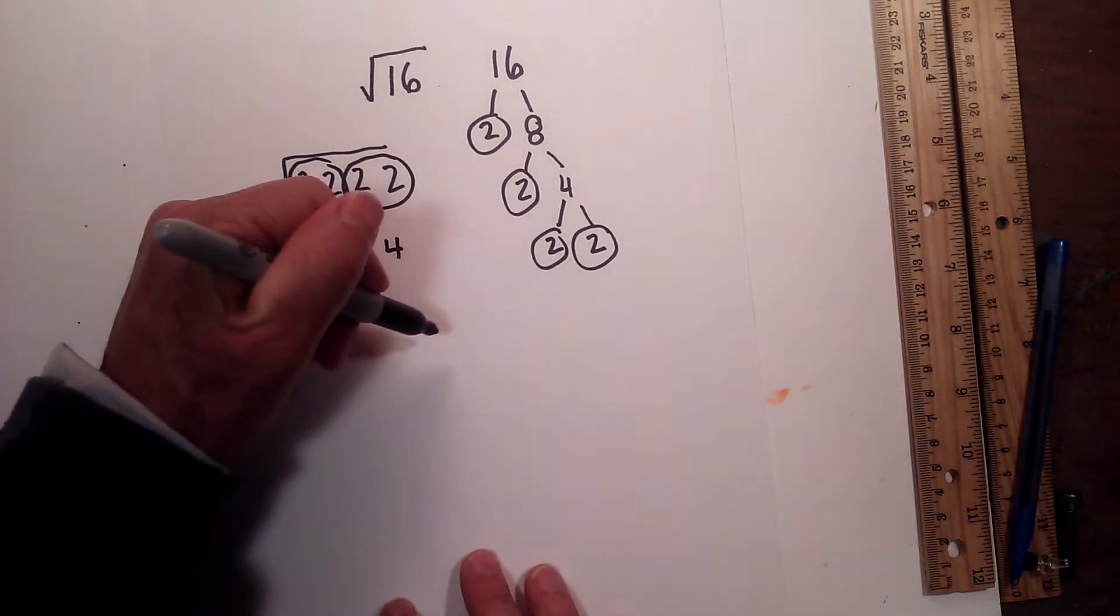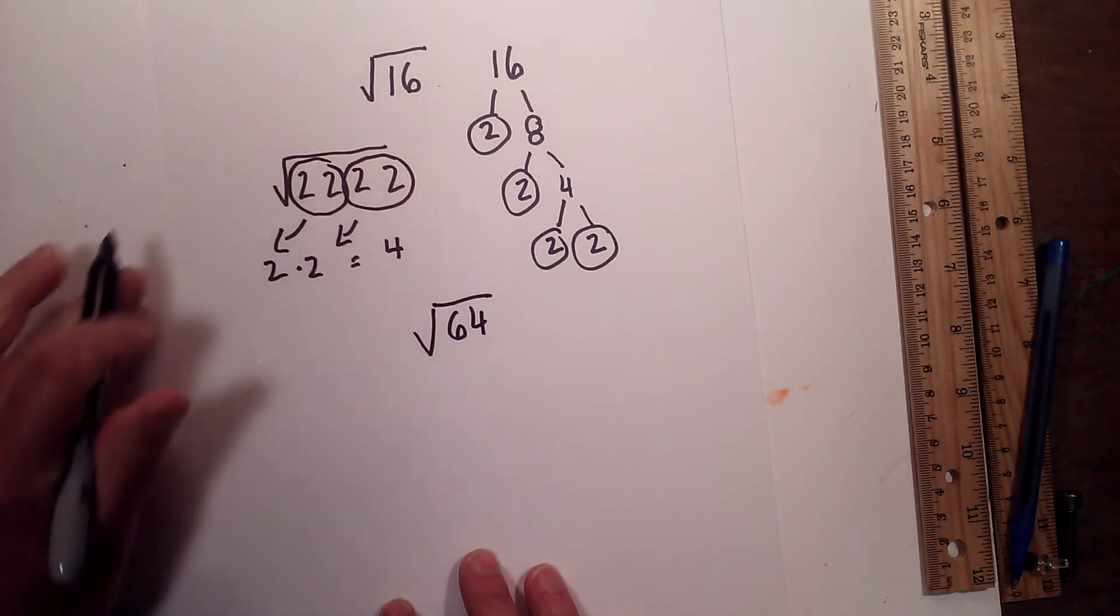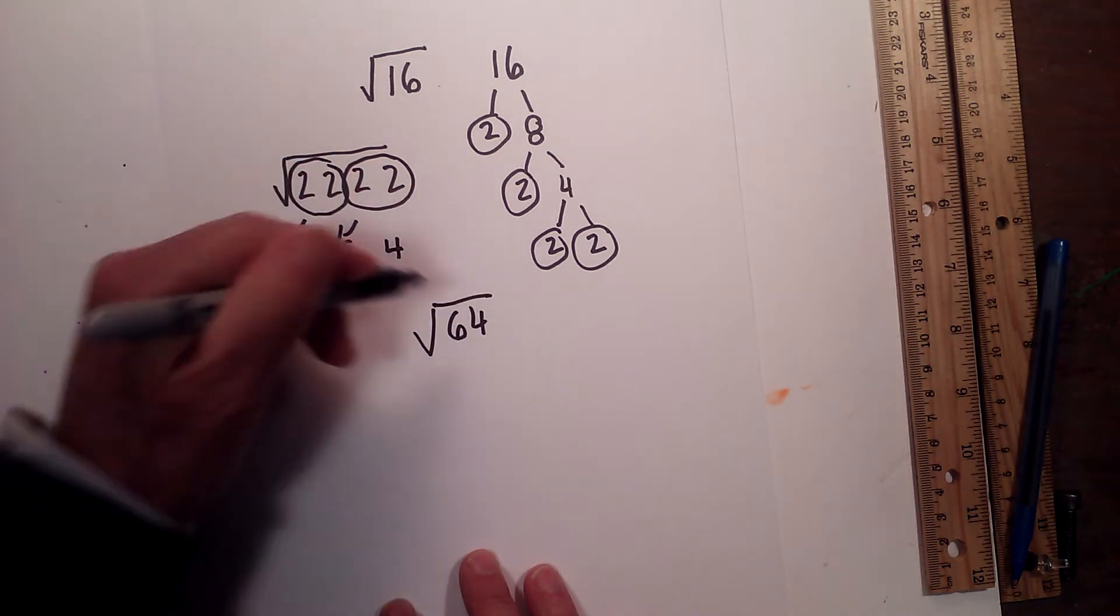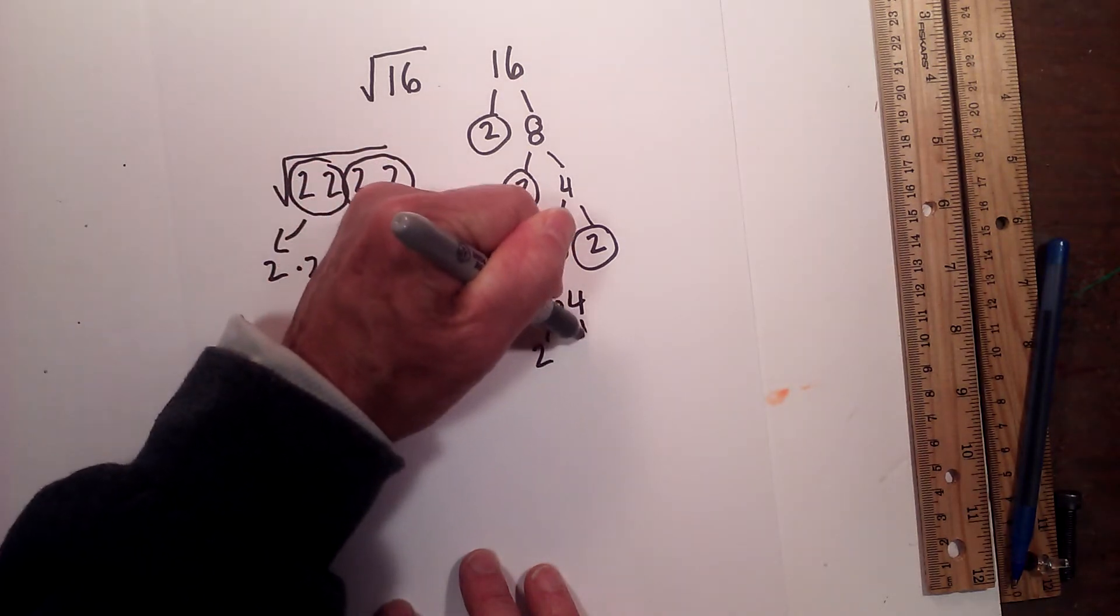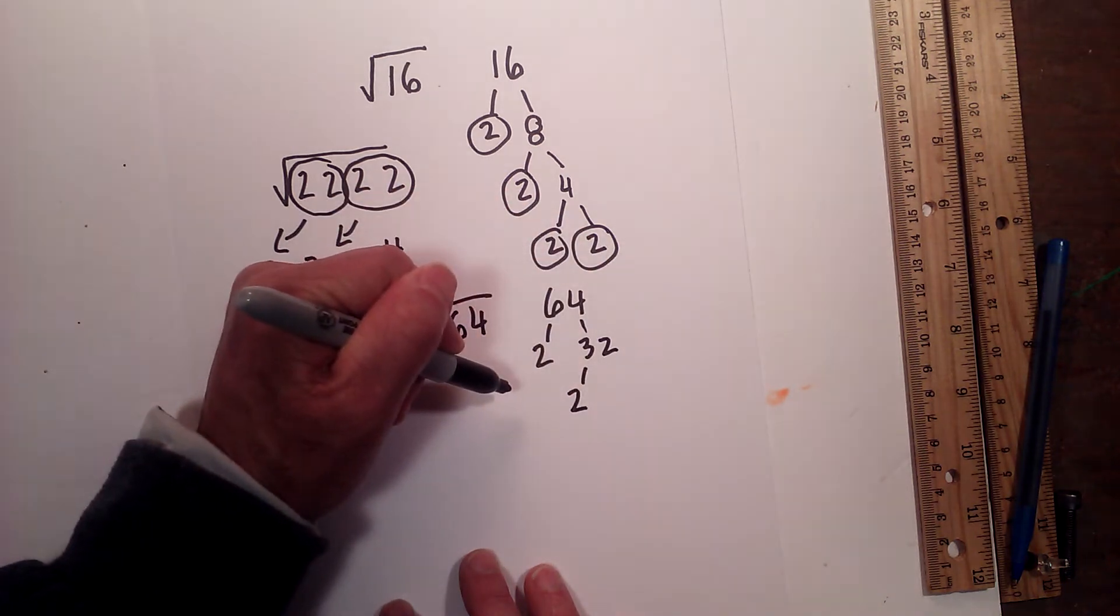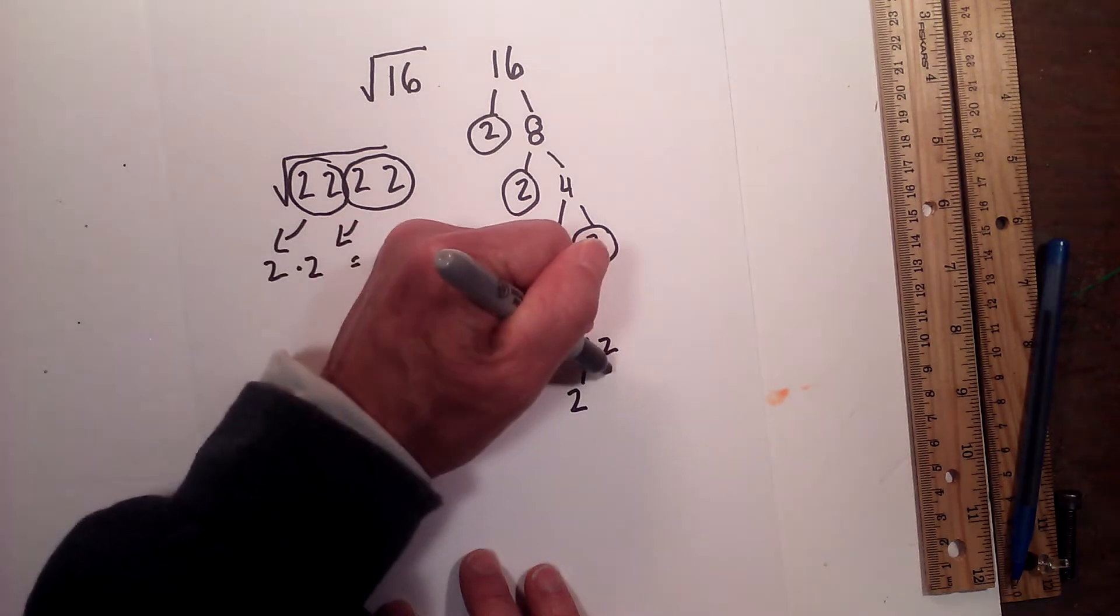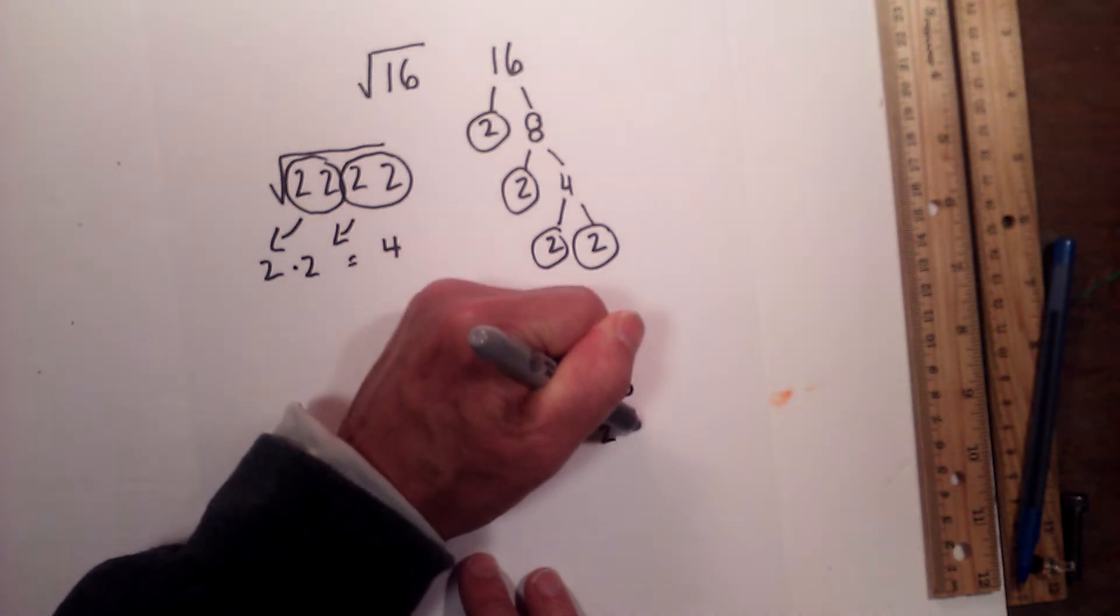Now let's work another example. We have the square root of 64. Again, I'm going to create a factor tree. So I'll write 64 here. We have 2 times 32, and then 2 times, let's see here, 64, 32, that would be 16.